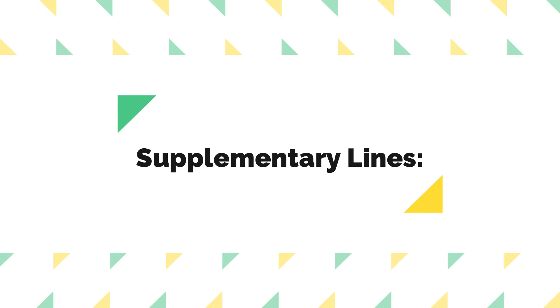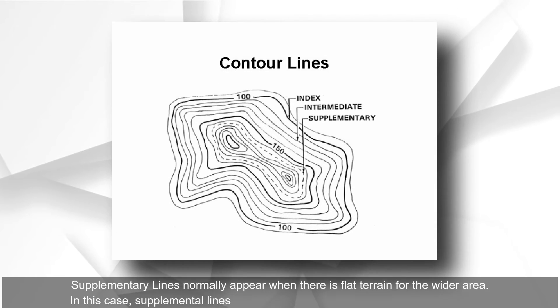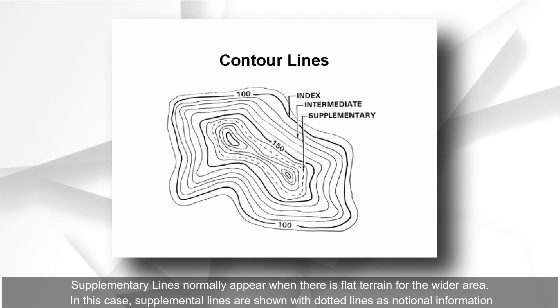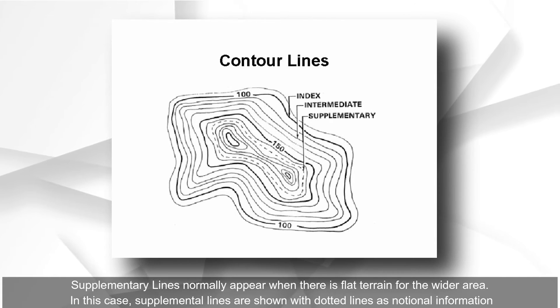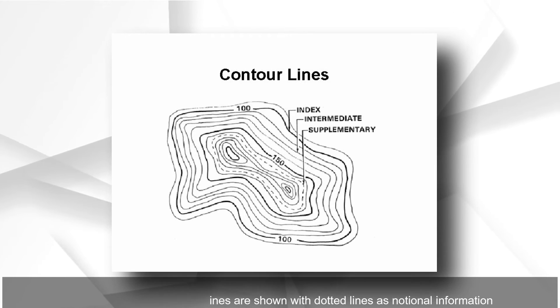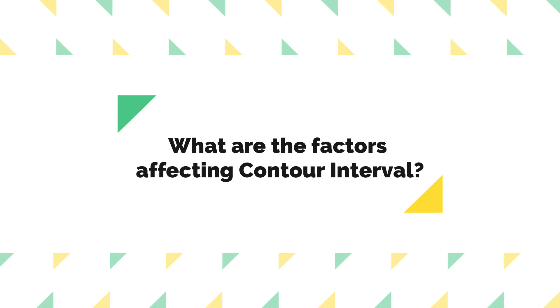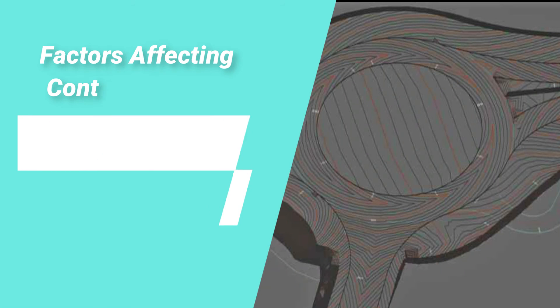Supplementary lines normally appear when there is flat terrain over a wider area. In this case, supplementary lines are shown with dotted lines as notional information.